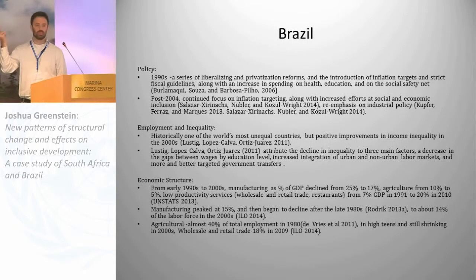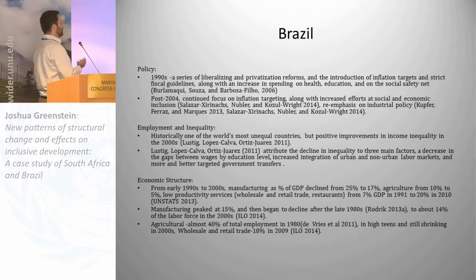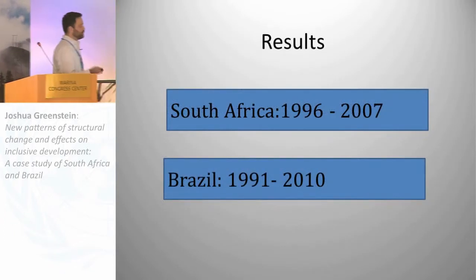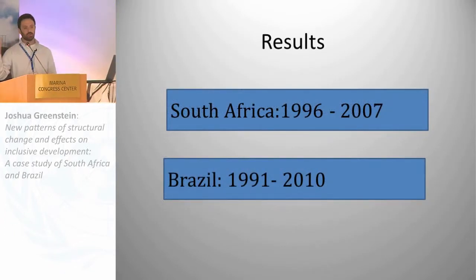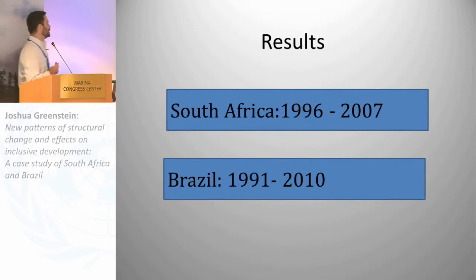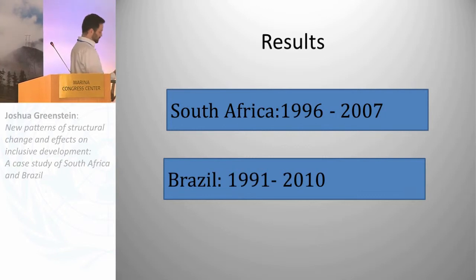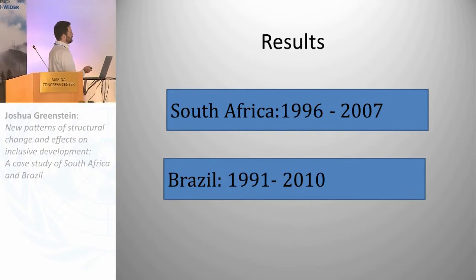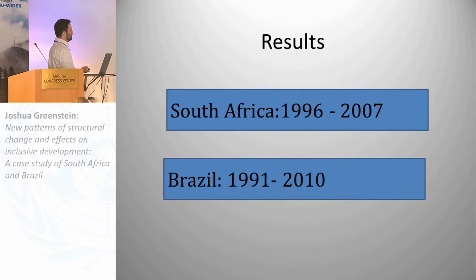The really important point is that both Brazil and South Africa fit this pattern of premature industrialization — low manufacturing employment — which is why I've used them here. The two periods I'm looking at are South Africa 1996 to 2007, and Brazil 1991 to 2010.